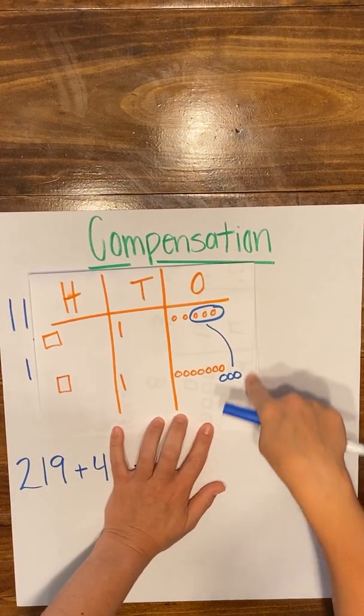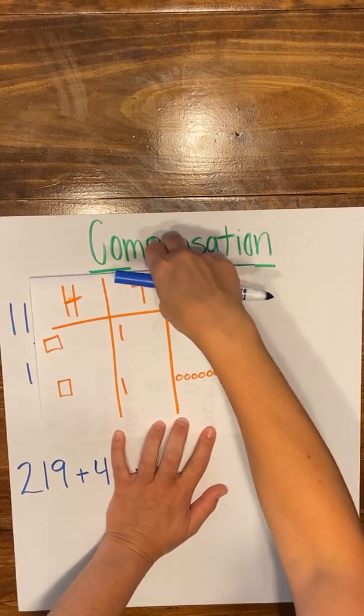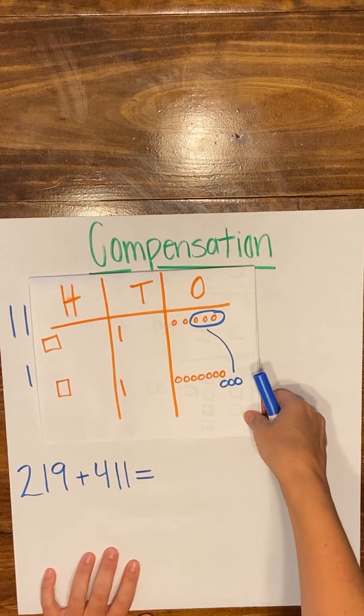So the number of ones in your ones column doesn't change. You're just moving around where they are to make the number easier to add in your brain when you're working on that mental math.